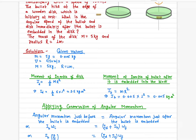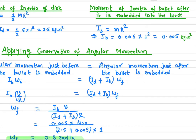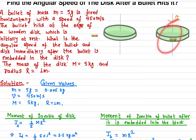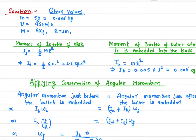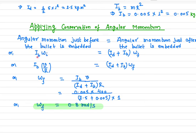Now we have to apply the conservation of angular momentum — just before the bullet hits the disk and just after the bullet is embedded into the disk. Just before the bullet is embedded, only the bullet has angular momentum. At that point, the bullet is just about to spin, so only the bullet's angular momentum is considered, which is I_bullet times omega.